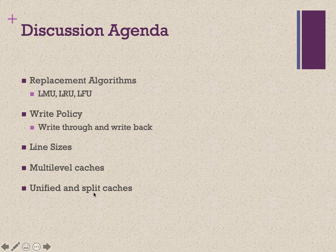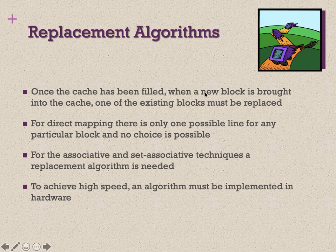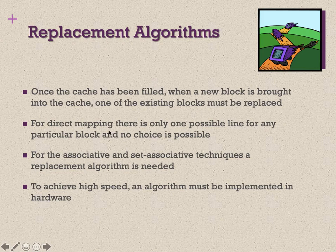This slide explains why we need a replacement algorithm. When the cache is filled and we need to bring a new block into the cache, the existing block must be replaced and stored back in RAM. For direct mapping, there is only one possible line for any particular block, so no choice is possible.